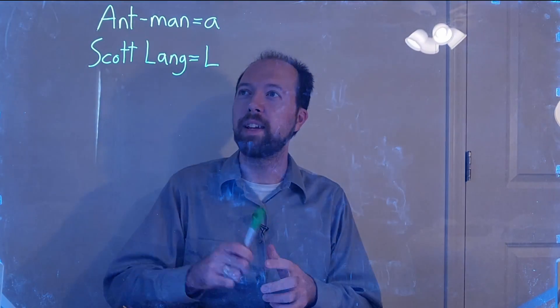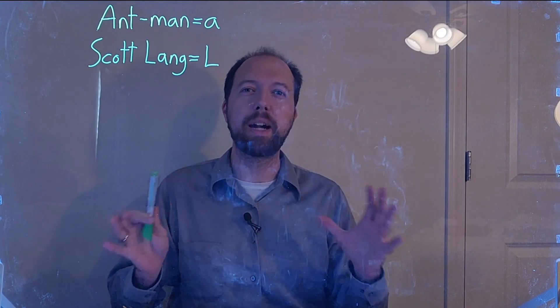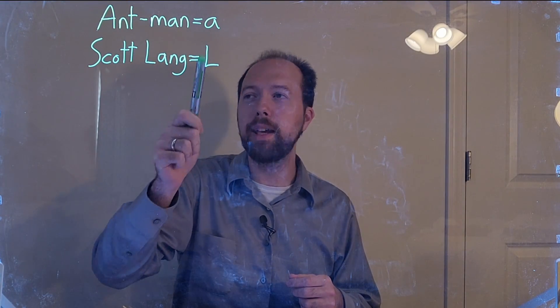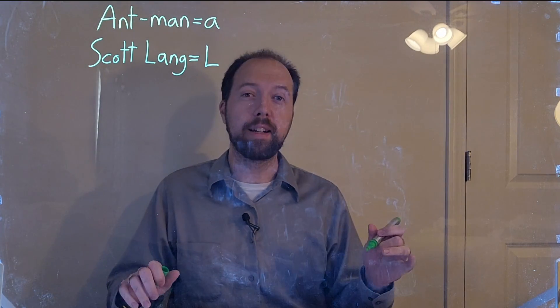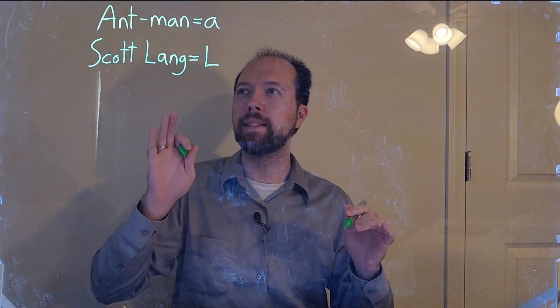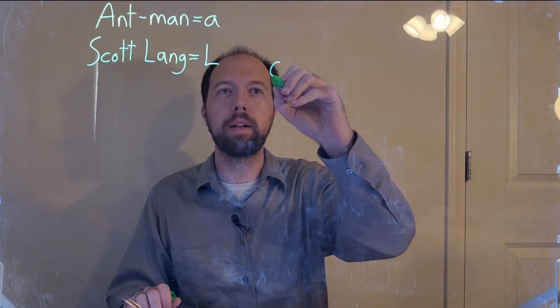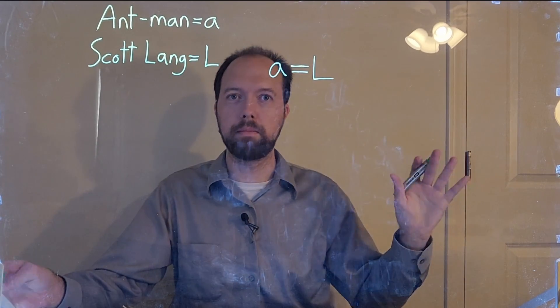So we start with Ant-Man and Scott Lang. So that I don't have to write out the whole names every time in the equation, Ant-Man will be equal to A, Scott Lang will be equal to L. So the only assumption we need to know is Ant-Man is Scott Lang. They're the same. So we have A equals L.